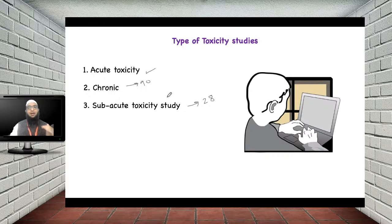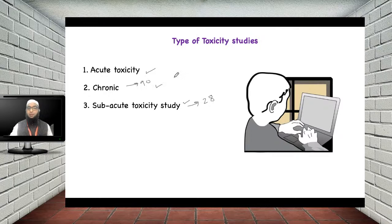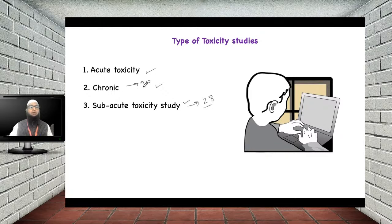The data received from sub-acute and chronic studies reflects the long-term effects of repeated drug administration. In acute toxicity, a single dose is given; in chronic or sub-acute studies, doses are given repeatedly — 28 days for sub-acute and 90 days for chronic — to observe toxic effects.